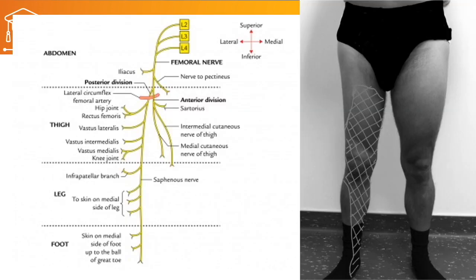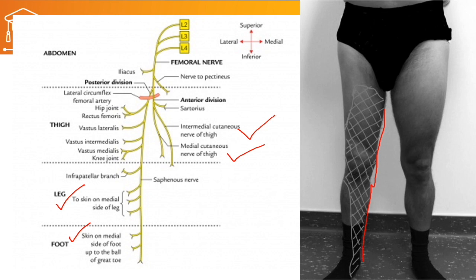For sensory supply, the intermediate cutaneous nerve of thigh and medial cutaneous nerve of thigh arise below the lateral circumflex femoral artery at the thigh. Other sensory supply covers the skin on the medial side of the leg and medial side of the foot up to the ball of the great toe. If the femoral nerve is injured above the hip joint, all of this dermatome area will be altered; if below the knee joint, only the leg and foot sensory supply will be altered.